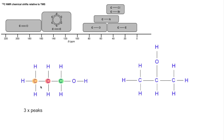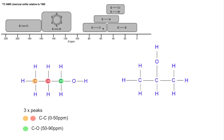So we'd expect to see three peaks. The orange and red carbons are both C–C environments, so their peaks would appear in that range, and the green one is a C–O environment, so between 50 and 90 ppm.